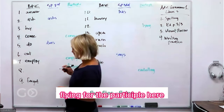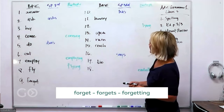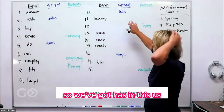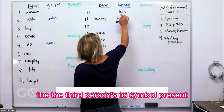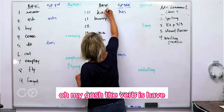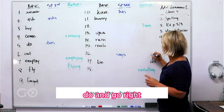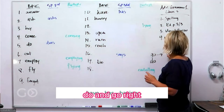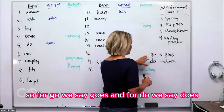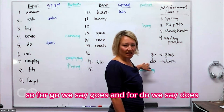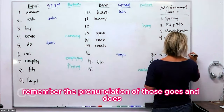'Flying' is the participle, so the verb is 'fly.' Then we've got 'forget.' We've got a lot in the base column. The third person simple present is 'has,' and the verb is 'have' — this is one of those irregular ones. Some other very common irregular ones are 'do' and 'go.' For 'go' we say 'goes,' and for 'do' we say 'does' — remember the pronunciation: 'goes' and 'does.'